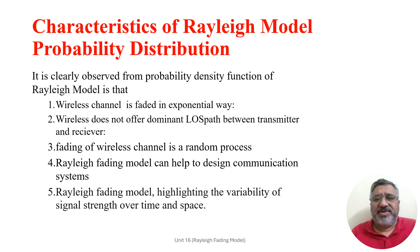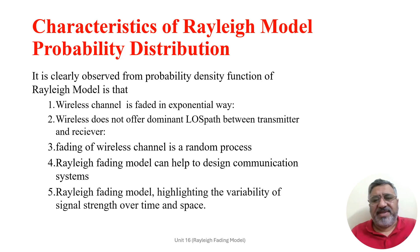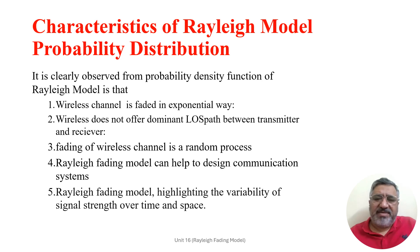This illustrates the distribution of the envelope of the received signal composed of multiple scattered paths. The third important characteristic is randomness of fading. The Rayleigh fading model captures the randomness of fading in wireless channels, describing how the received signal strength fluctuates due to constructive as well as destructive interference among multiple components, resulting in variation in signal strength over time and space.